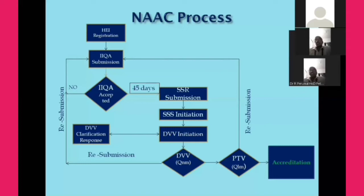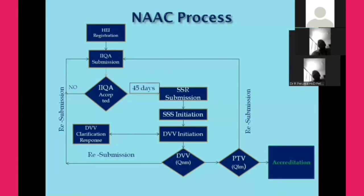The student satisfaction survey carries some weightage during the assessment. After the SSS, DVV initiation takes place. The Data Validation and Verification Committee scrutinizes all documents submitted along with the SSR. If there are any queries, missing data, or wrong entries, the committee sends a clarification to the institution, which must then respond. After the response, the DVV assessment takes place. Once DVV assessment is over, a peer team visit is executed — expert committee members visit the institution and assess it for accreditation. Combining the peer team visit and DVV, we obtain accreditation.